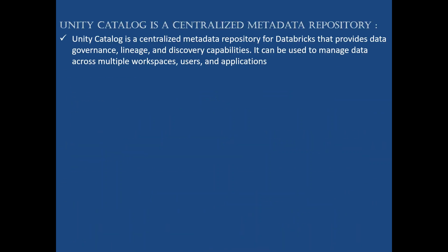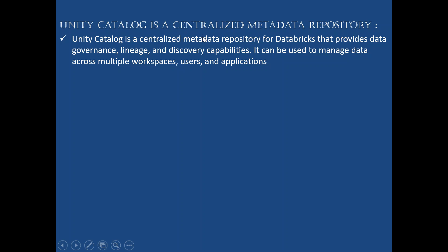Unity Catalog is a centralized metadata repository. Centralized means at one place. Metadata means data about data — for example, if you take any movie: release date, who is the director, who is the hero. Repository is a storage location. So Unity Catalog is a centralized metadata repository where we store all data about data, like when a file was created, what columns we have, what the schema is, the size of the file, etc.